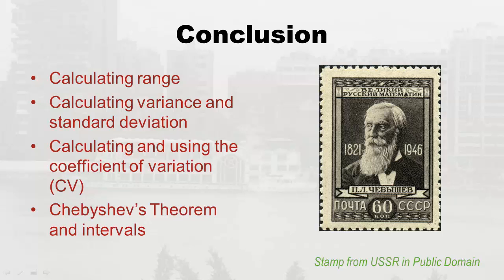In conclusion, we learned how to calculate the range, how to calculate the variance and standard deviation, how to calculate and interpret the coefficient of variation, and the difference in formulas between sample and population. We also learned about Chebyshev's theorem — how he figured it out, how to calculate his intervals, and how to interpret them. Here's a picture of Chebyshev on a USSR stamp — he was a Russian mathematician. Good job making it through the measures of variation. Now you're ready for the quiz, homework, or whatever comes next!